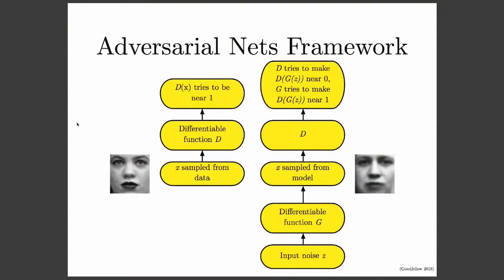The discriminator network is a differentiable function with parameters that control the shape of the function — in other words, it's usually a neural network. We apply the function D to the image X. The goal of D is to make D(X) be very close to 1, signifying that X is a real example that came from the training set. In the other half of the training process, we sample some random noise Z from a prior distribution over latent variables in our generative model. You can think of Z as just a source of randomness that allows the generator to output many different images instead of outputting only one realistic image.